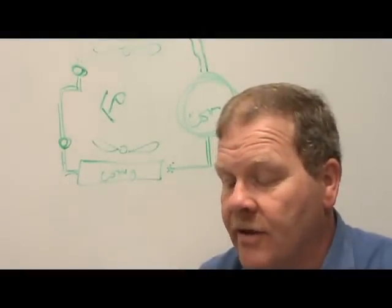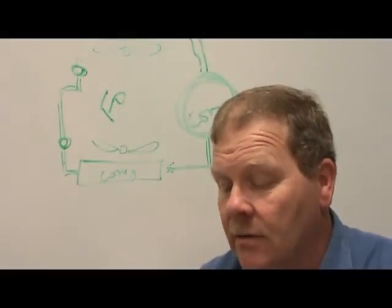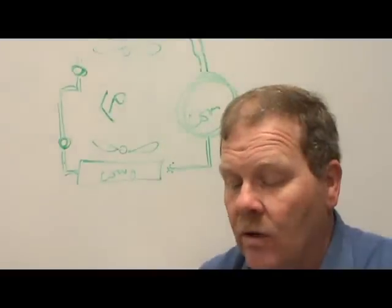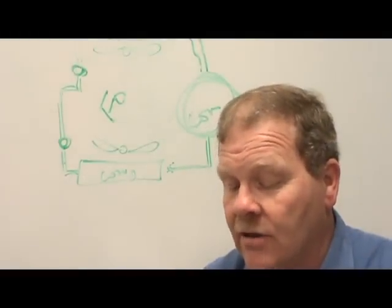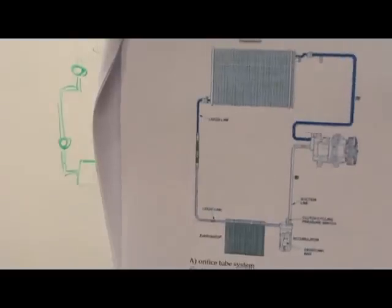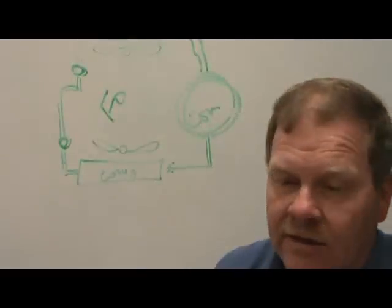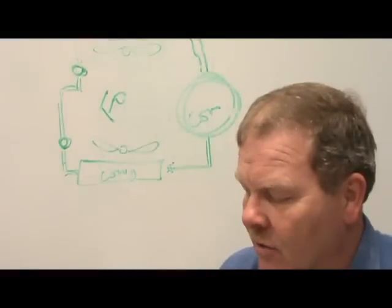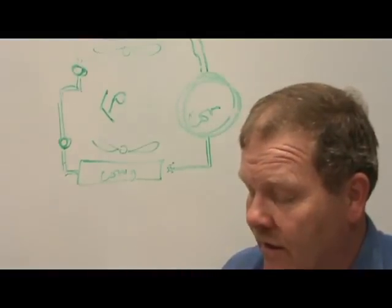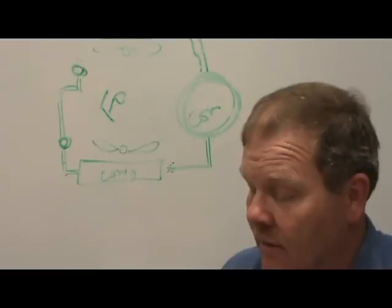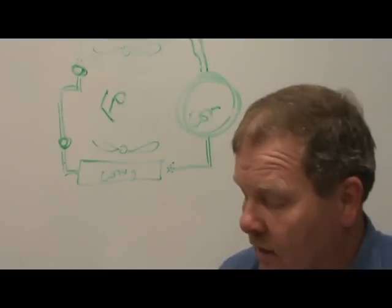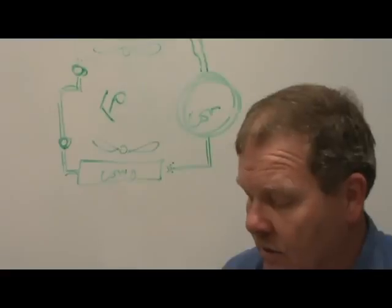Modern automotive refrigerant systems can be all of the following — that's going to be D. What type of refrigerant system is shown in this illustration? Looking at the diagram — you can see the orifice tube and the accumulator between the evaporator — that's an orifice tube system, answer A. Some hybrid vehicles use an electric compressor to keep the AC system operating when the engine is off.